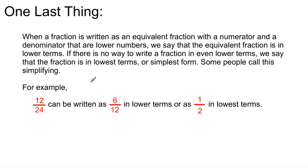When a fraction is written as an equivalent fraction with a numerator and a denominator that are lower numbers, we say that the equivalent fraction is in lower terms. If there's no way to write a fraction in even lower terms, we say that the fraction is in lowest terms or simplest form. We call this simplifying, as I said earlier.